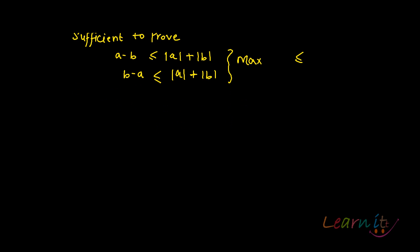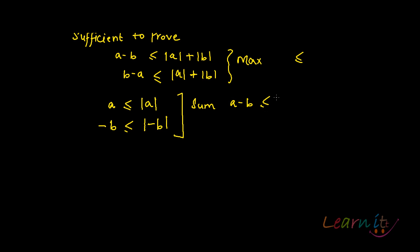Starting off: we know that a ≤ |a|, and minus b ≤ |minus b|. Adding these two inequalities, the sum gives us a minus b ≤ |a| + |minus b|. Now |minus b| is the same as |b|, since absolute values are symmetric — absolute value of minus one is also one. So a minus b ≤ |a| + |b|.